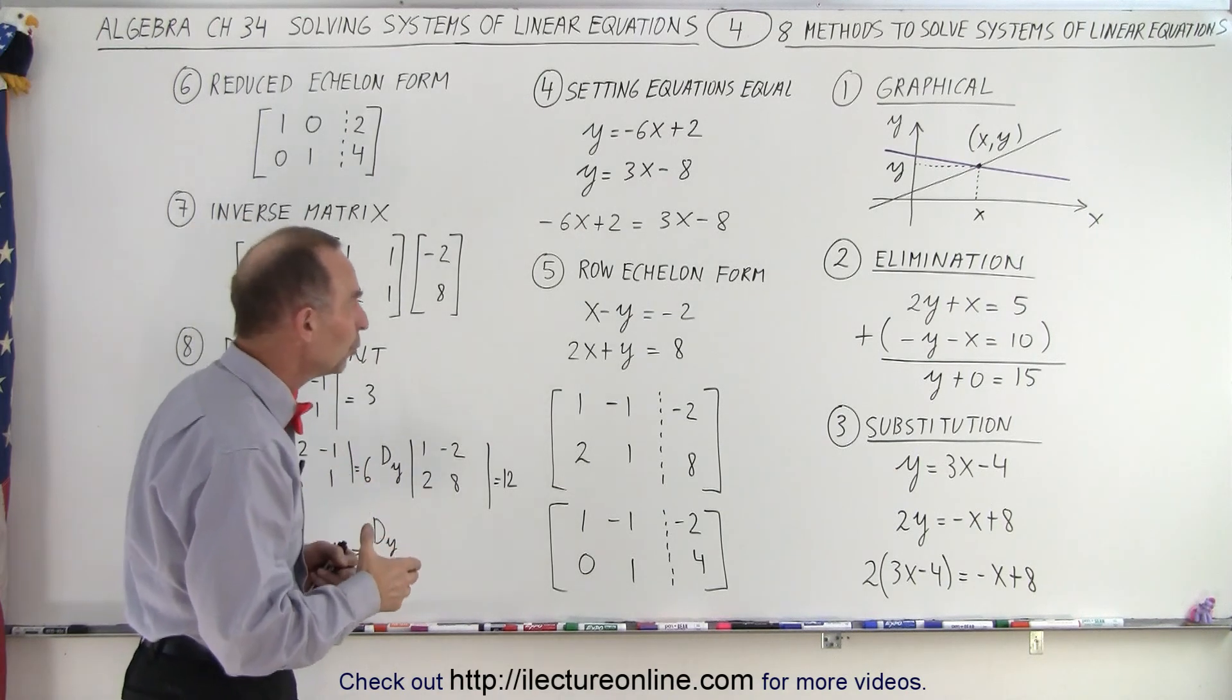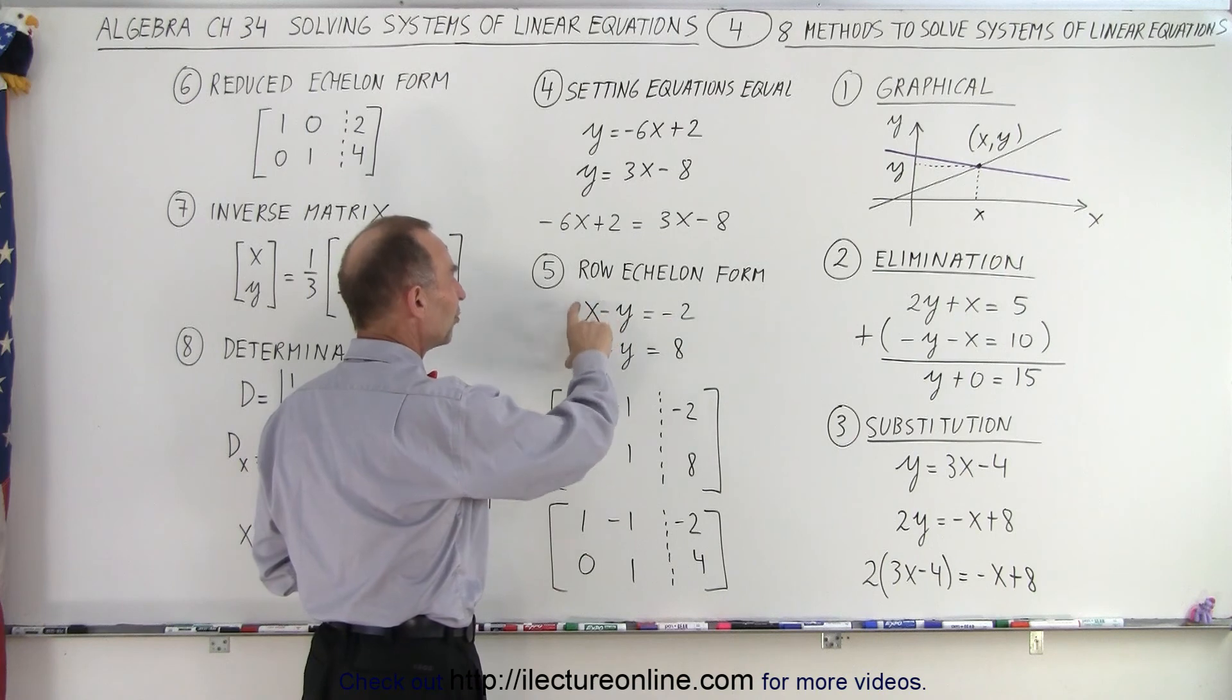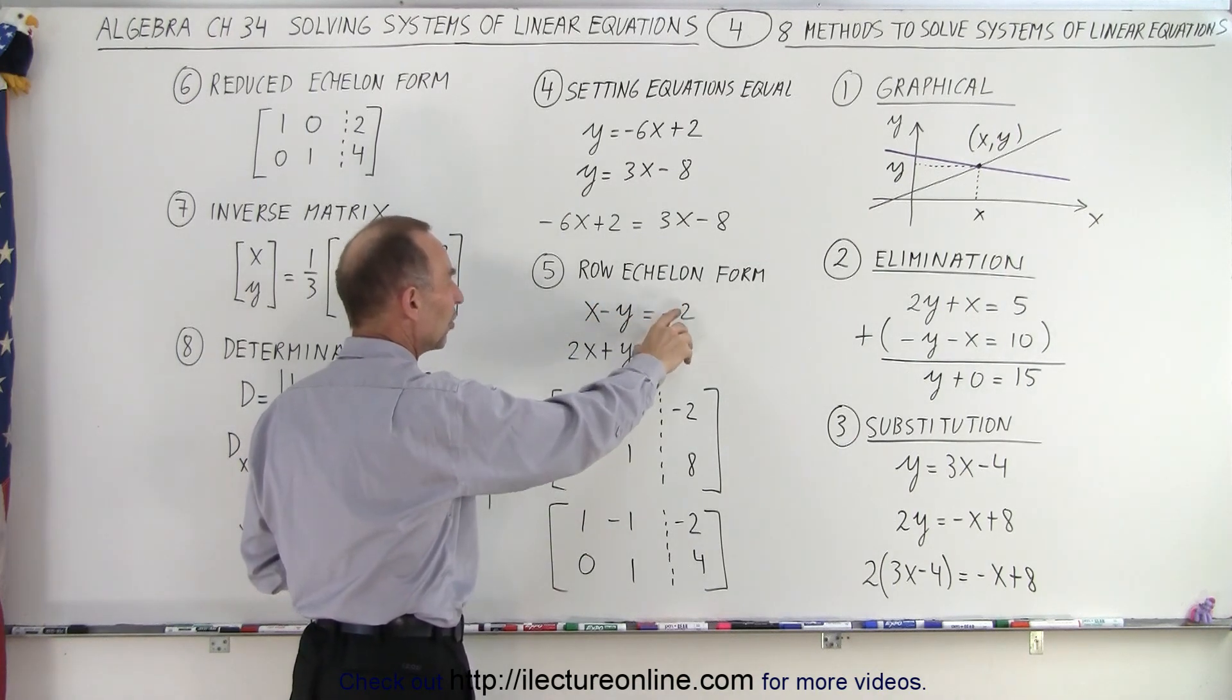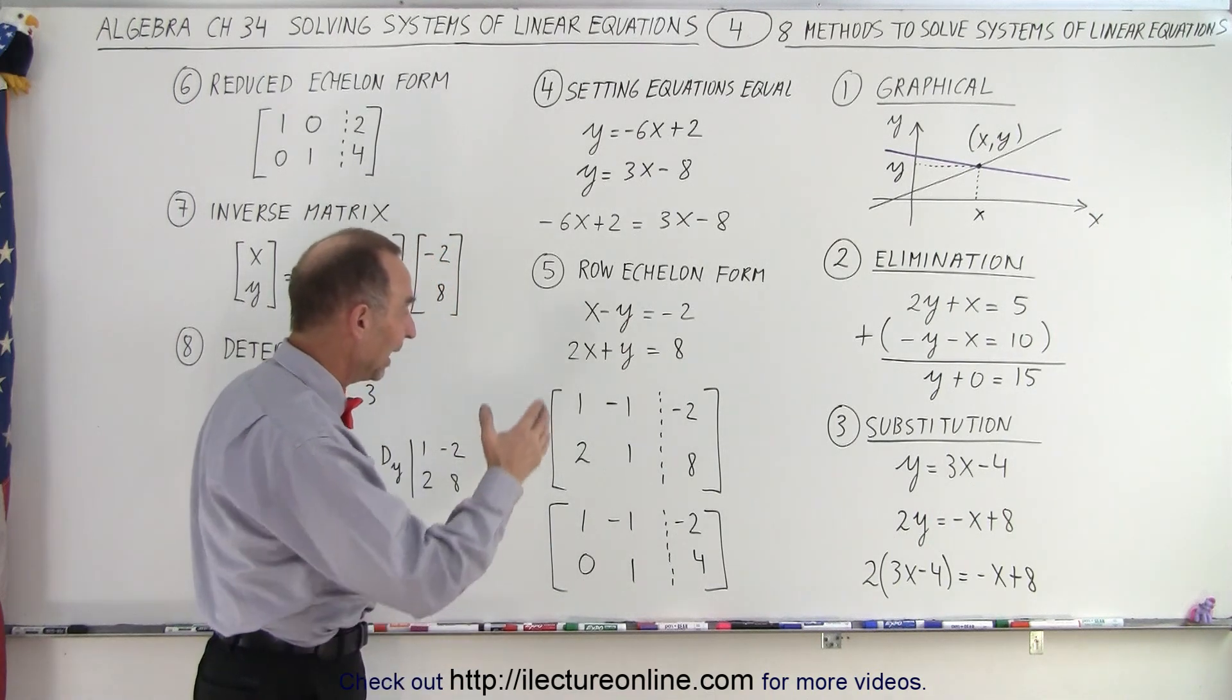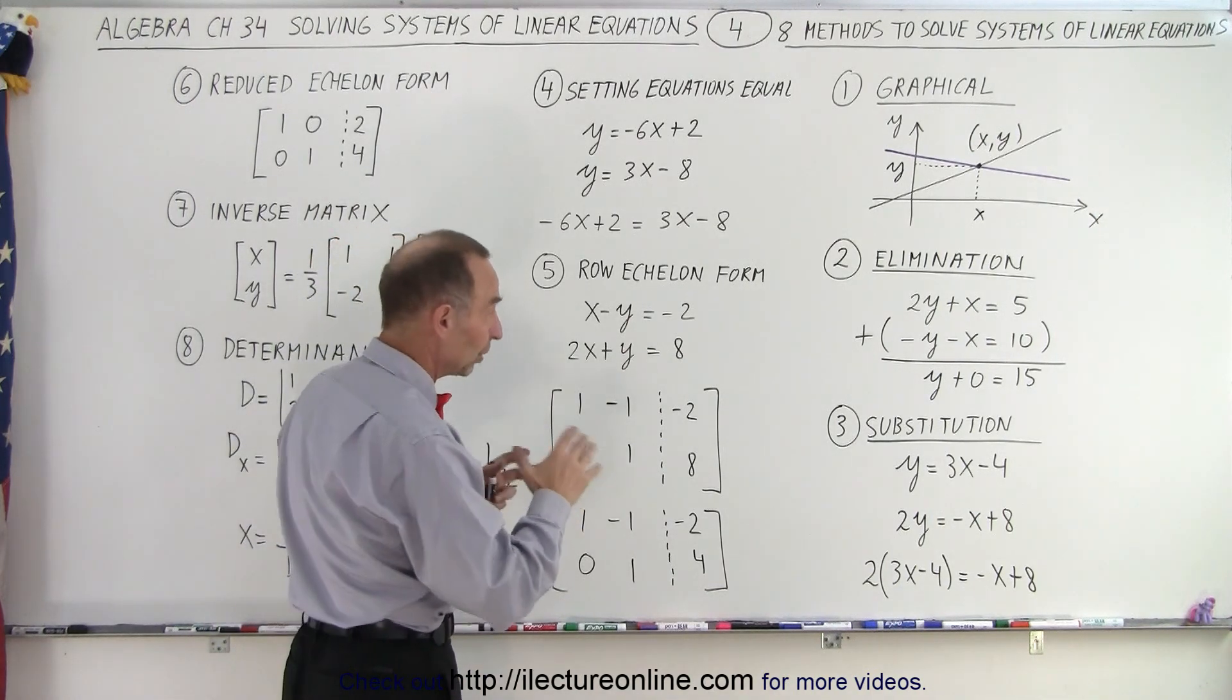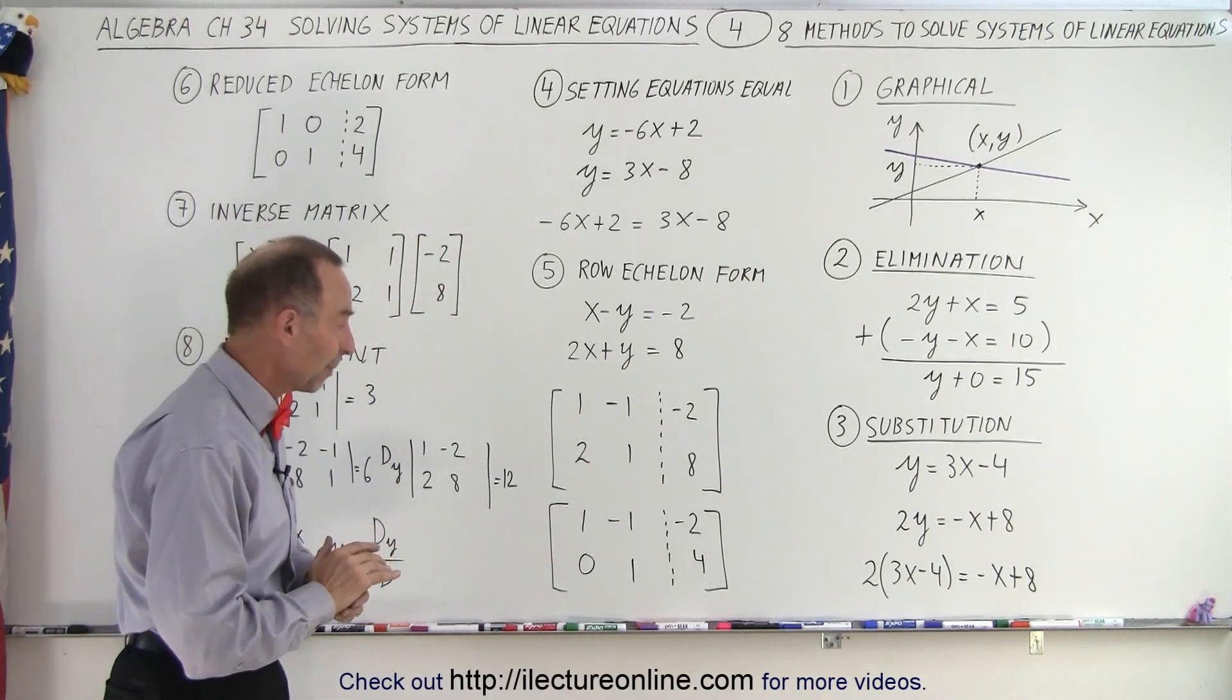Or we can use what we call the row echelon form. We can take the coefficients of x and y of the two equations and we can take constants and put them into this what we call augmented matrix format. And then through a method that we show you later, and again, we'll show you how to do all of those various methods with examples.